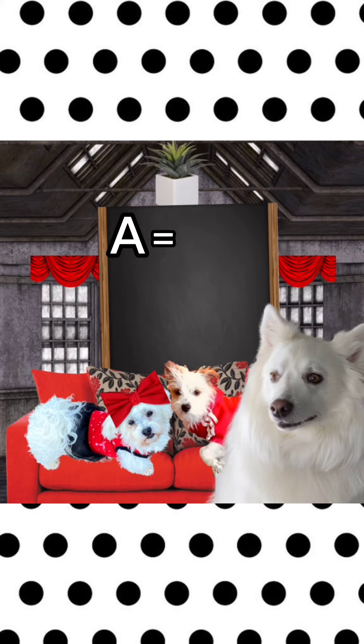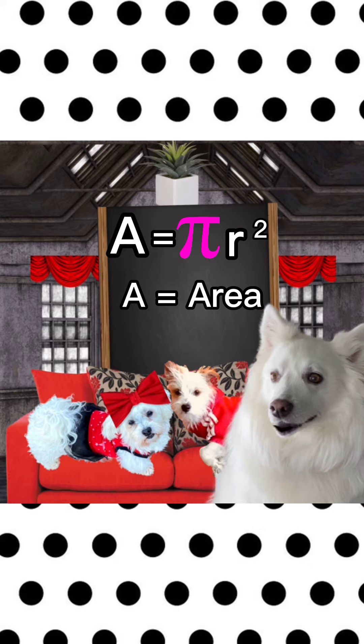A equals pi r squared. So what do all those letters stand for, Elvis? The A, that is going to be our answer. That is going to be the area of the circle.